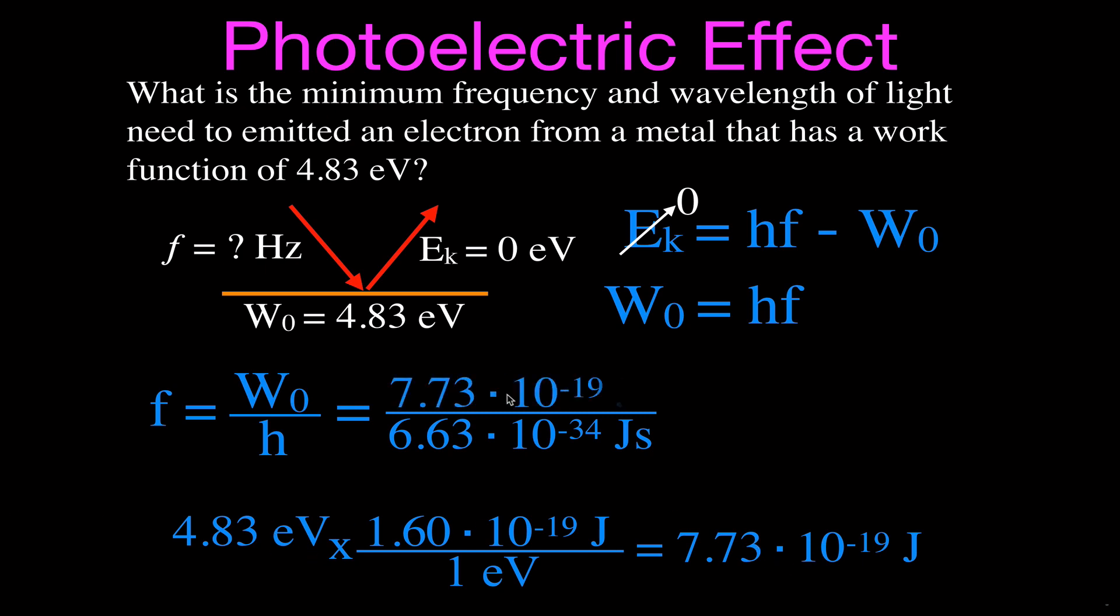It's just that in order to put this in here so that we can cancel our joules and be left with frequency in seconds or 1 over seconds or hertz, then we get that that is 1.17 times 10 to the 15 hertz. That is the frequency for that light. That will just kick out. That's enough energy that will just kick out those electrons.